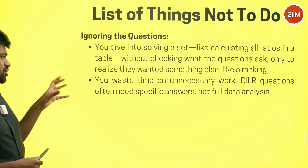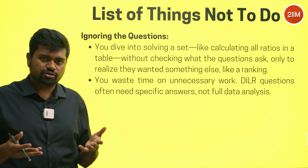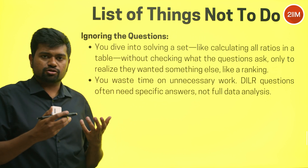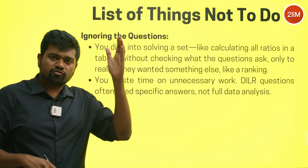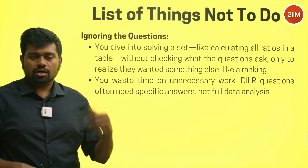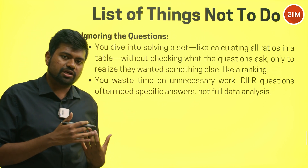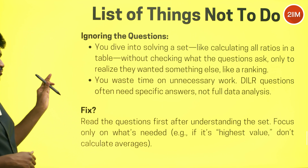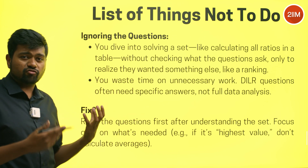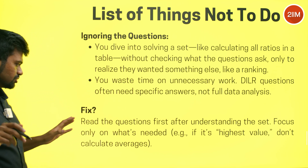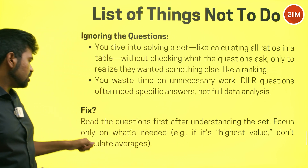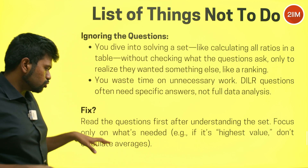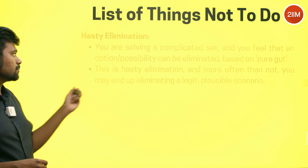Ignoring what the question actually asks. Given a huge table, you might start calculating averages for every column — but the question may only ask about column A or C. DILR questions often need specific answers; seldom do they require filling in all blanks. The fix: read the questions first, understand the set, and focus only on what's needed.